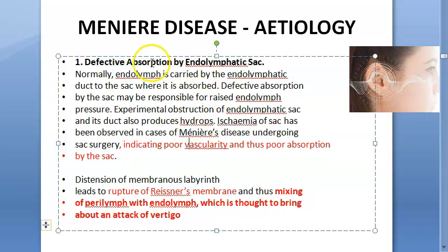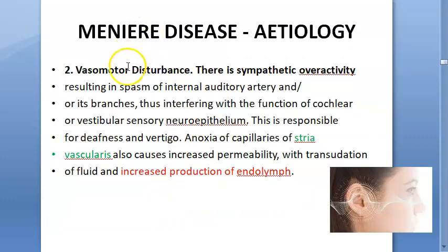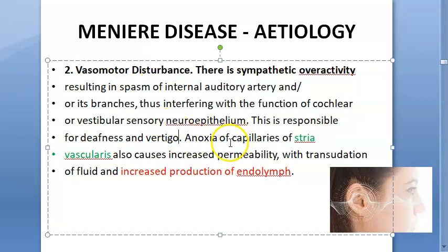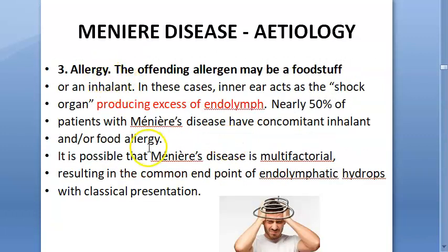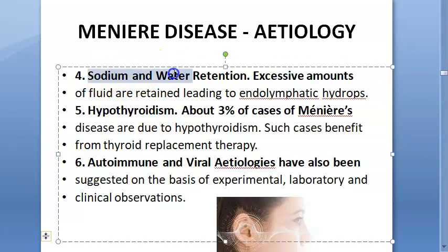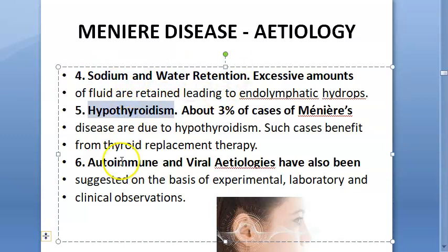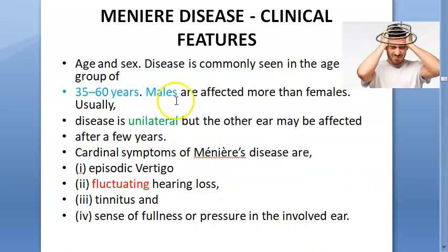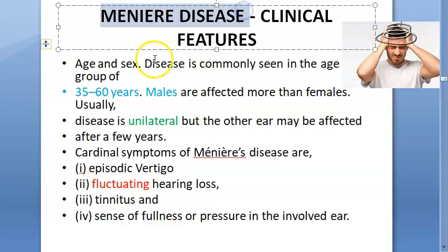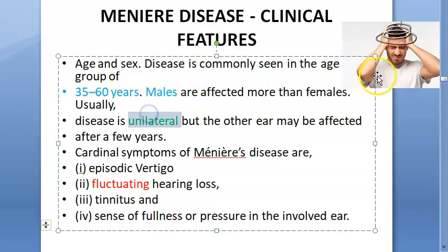Causes of increased endolymph include defective absorption by the endolymphatic sac, stress producing excess endolymph, allergies, high sodium intake causing water retention, hypothyroidism, and autoimmune or viral etiologies. The condition is seen more in males and affects only one ear.